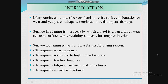Many engineering components must be very hard to resist surface indentation or wear, and yet possess adequate toughness to resist impact damage. Surface hardening is a process by which steel is given a hard wear-resistant surface while retaining a ductile but tougher interior. Surface hardening is usually done for improvement of wear resistance, to improve resistance to high contact stresses, for improvement of fracture stiffness, improvement of fatigue resistance, and sometimes to improve corrosion resistance.